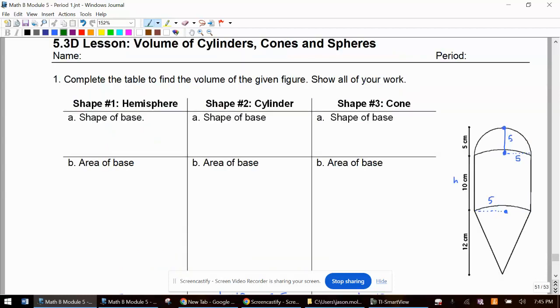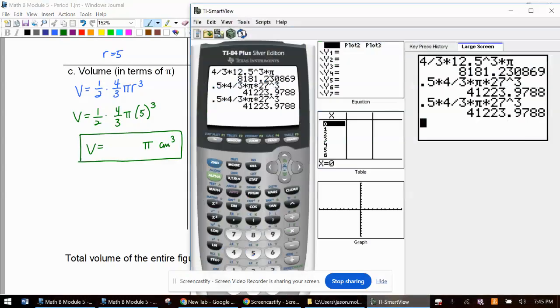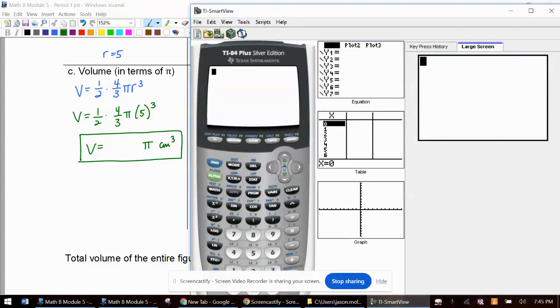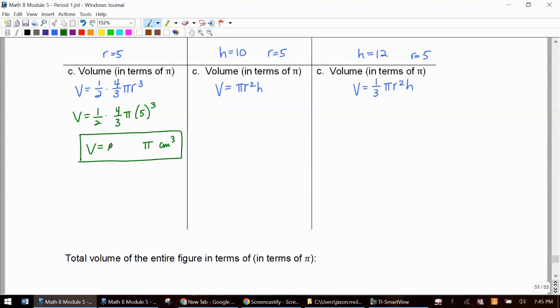And we're going to get our answer in terms of π. And what are we dealing with here? We're dealing with centimeters. So this is cubic centimeters. So we have 0.5 times four thirds times, we're going to wait to do the π five cubed. So 83.3 repeating.